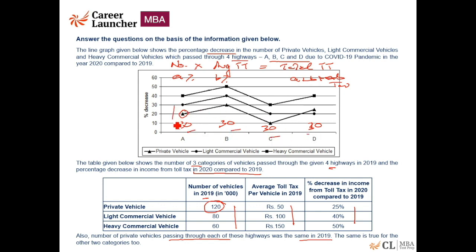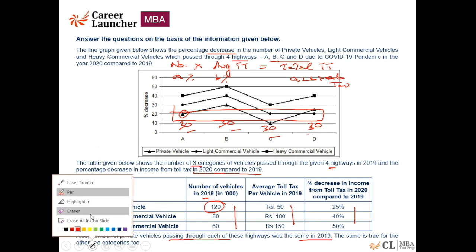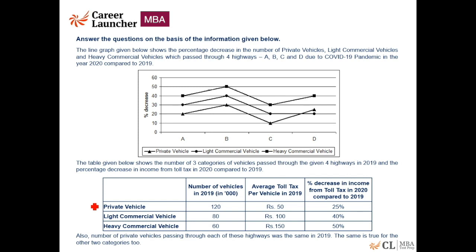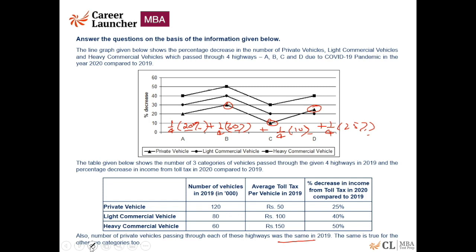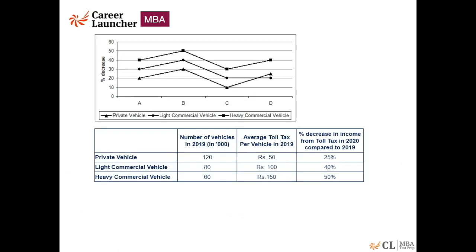Because the weights are equal, the percentage change can be computed as a simple arithmetic mean rather than a weighted average. For example, the percentage reduction in private vehicles overall will be one-fourth of 20% plus one-fourth of 30% plus one-fourth of 10% plus one-fourth of 25% — that is, the arithmetic mean of 20, 30, 10, and 25. This simplifies the task considerably.